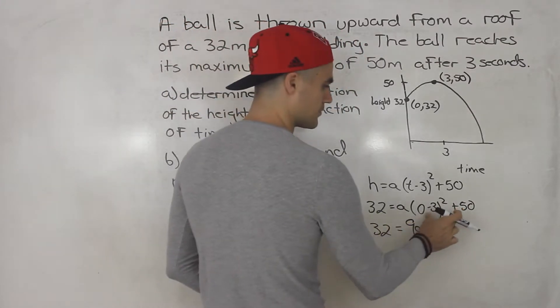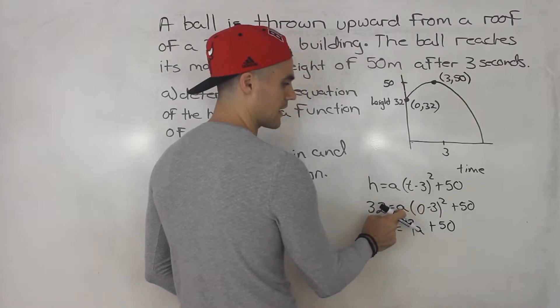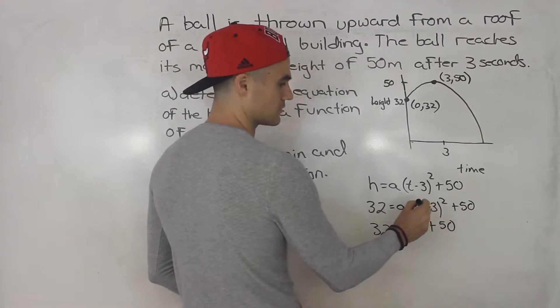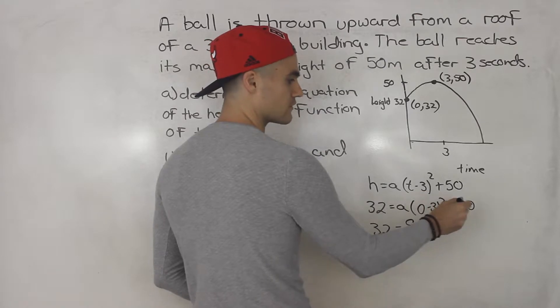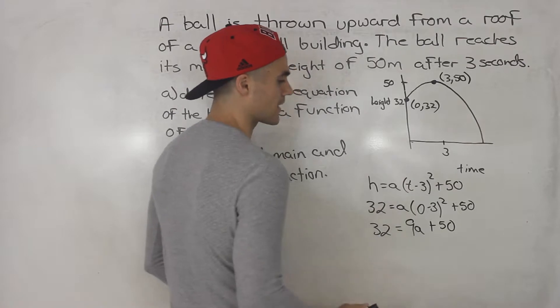So remember you keep these two separate because we're multiplying here. So we're multiplying by the a, and then the 50 we are adding. A lot of times what students will do is they'll square this bracket, it'll be 9, and then they'll add the 50. But you can't do that. The 9 has to be multiplied by the a because we have to do BEDMAS.